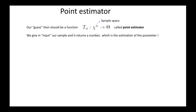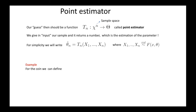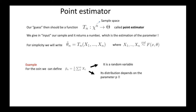In the real case scenario, we give as input to the function the actual values we have collected, and we get a number that will be our estimation. For simplicity, we will write theta-hat_n instead of T_n evaluated at x_1, ..., x_n. For the example of the coin, since the probability of getting a head is equal to the mean of the distribution, we can take as the estimator of the parameter p the intuitive one, that is the sample mean. Note that it is a random variable whose distribution will depend on p. In general, the point estimator theta-hat_n is a random variable whose distribution depends on the parameter theta.